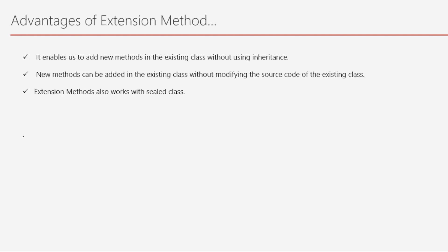Now we will look at the advantages of extension methods. Number one: it enables us to add new methods to an existing class without using inheritance — so if you don't want to use inheritance, extension method is the best choice. Number two: new methods can be added without modifying the source code of the existing class — useful when you don't have access to that source code. Finally, extension methods also work with sealed classes — since sealed classes cannot be inherited, extension methods let you add new methods to them.